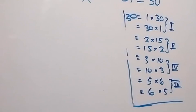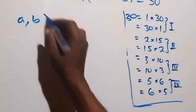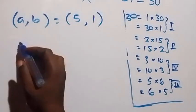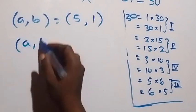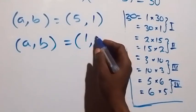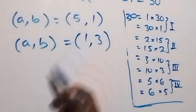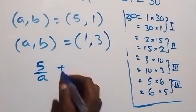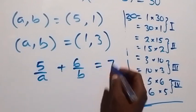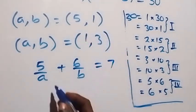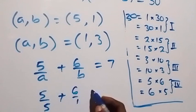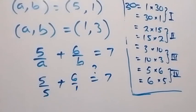Therefore, (a, b) equals (5, 1) from Case 1, and from Case 2 we also have (a, b) equals (1, 3). That is, a equals 5 and b equals 1, and a equals 1 and b equals 3. Now testing in the original equation 5/a plus 6/b equals 7: substituting a equals 5 and b equals 1 gives 5 over 5 plus 6 over 1.